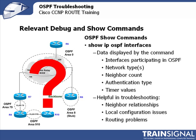Show IP OSPF interfaces is particularly helpful because it will show you all the interfaces that have been configured and are participating in OSPF, the network types — remember broadcast, non-broadcast, and so forth — the neighbor count, authentication types, and timer values. This can be helpful in troubleshooting neighbor relationships, local configuration issues, and routing problems.